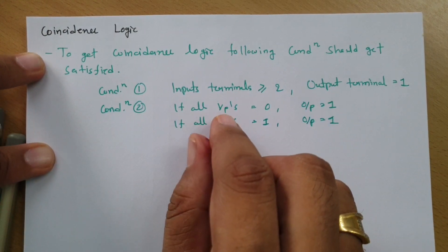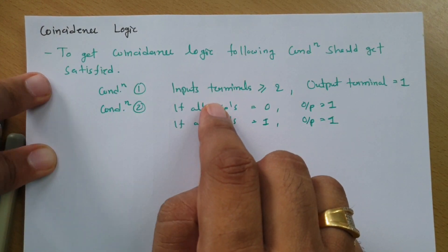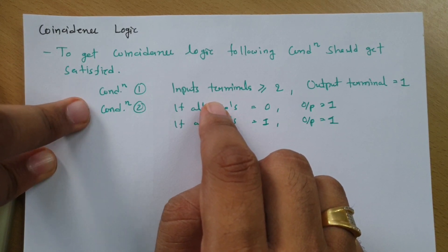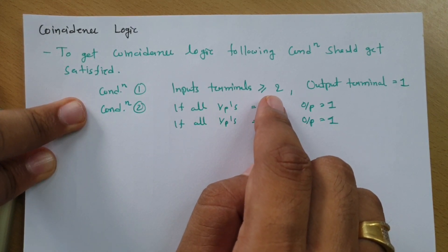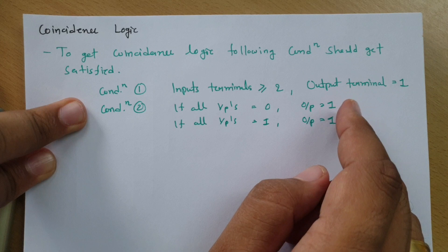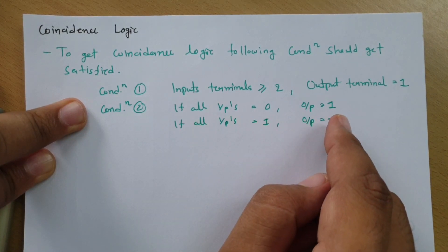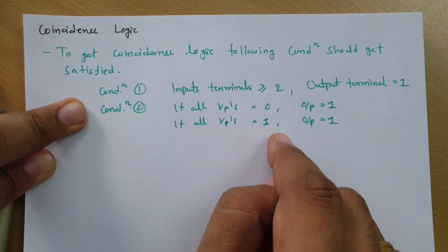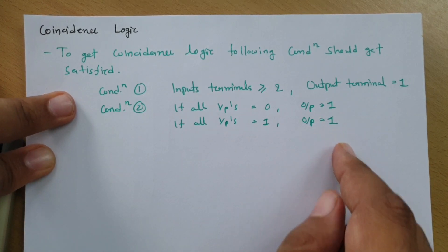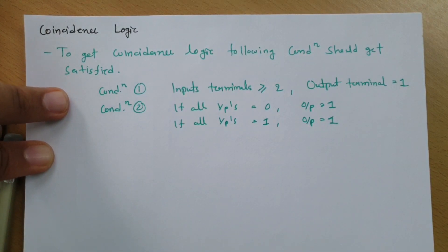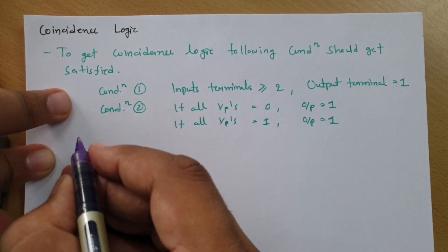So here, as per coincidence logic, we can say there are multiple inputs and a single output. If all inputs are zero, output is one. If all inputs are one, output is one. Let me explain this with some practical examples to make it more clear.